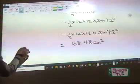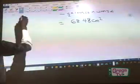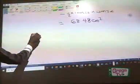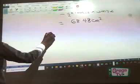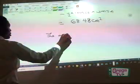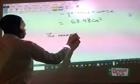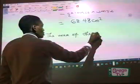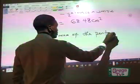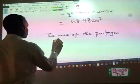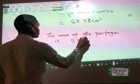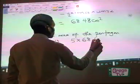And when I'm through with that, all I have to do is multiply this by 5. So therefore, the area of the pentagon, the area of the pentagon is 5 times 68.48.